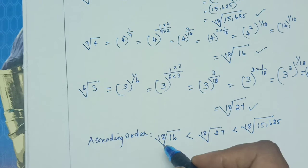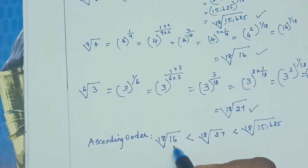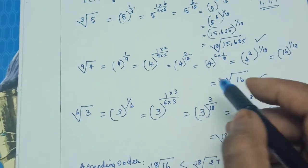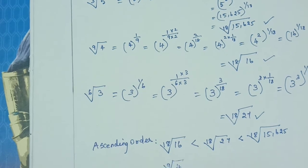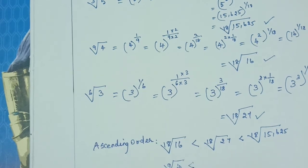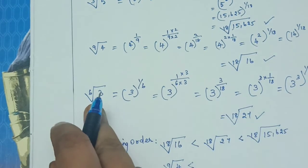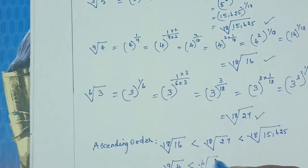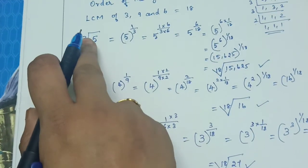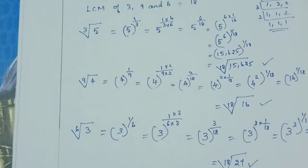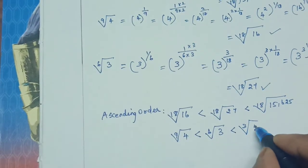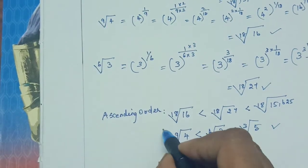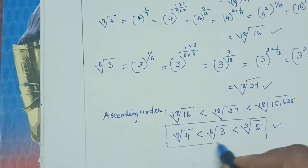Now convert back to the original forms. The 18th root of 16 comes from 9th root of 4, the 18th root of 27 comes from 6th root of 3, and the 18th root of 15,625 comes from cube root of 5. So the ascending order is: 9th root of 4 less than 6th root of 3 less than cube root of 5.